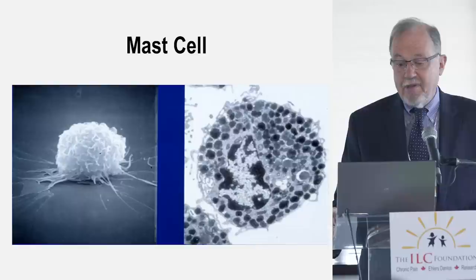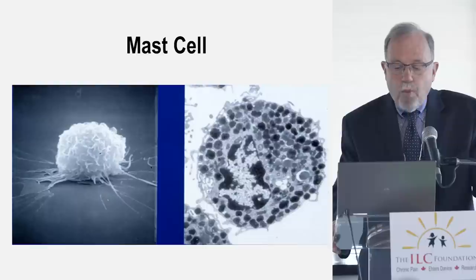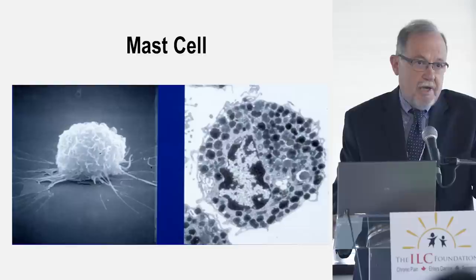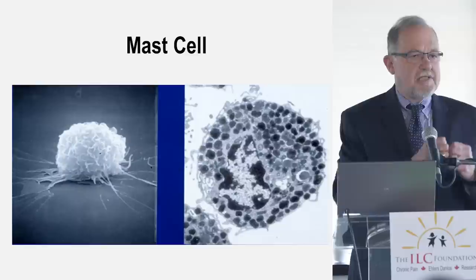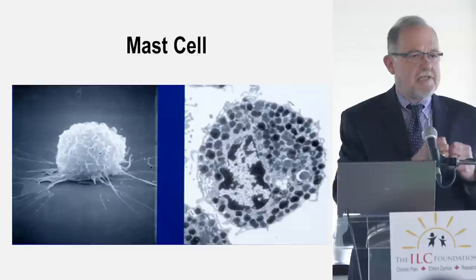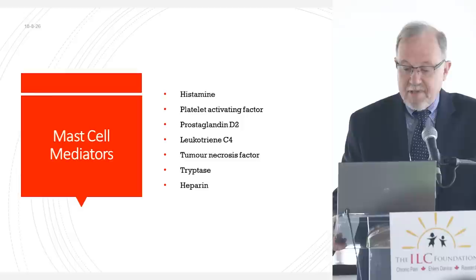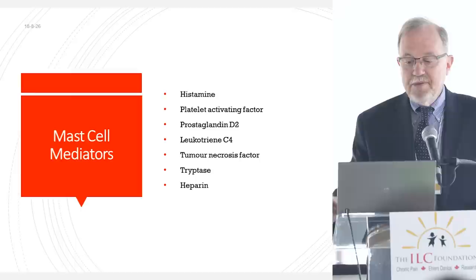On your left, you see a resting mast cell. That resting mast cell has — you see those black round spots inside? Those are called granules, and those granules contain a whole lot of different chemicals. When a mast cell is activated, it spews all those granules out from within the cell into the surrounding area. Those chemicals are released, and when they interact with various target organs or target cells, they elicit very specific constellations of symptoms. There are many dozens of mediators — that's what we call those chemicals — within mast cells.